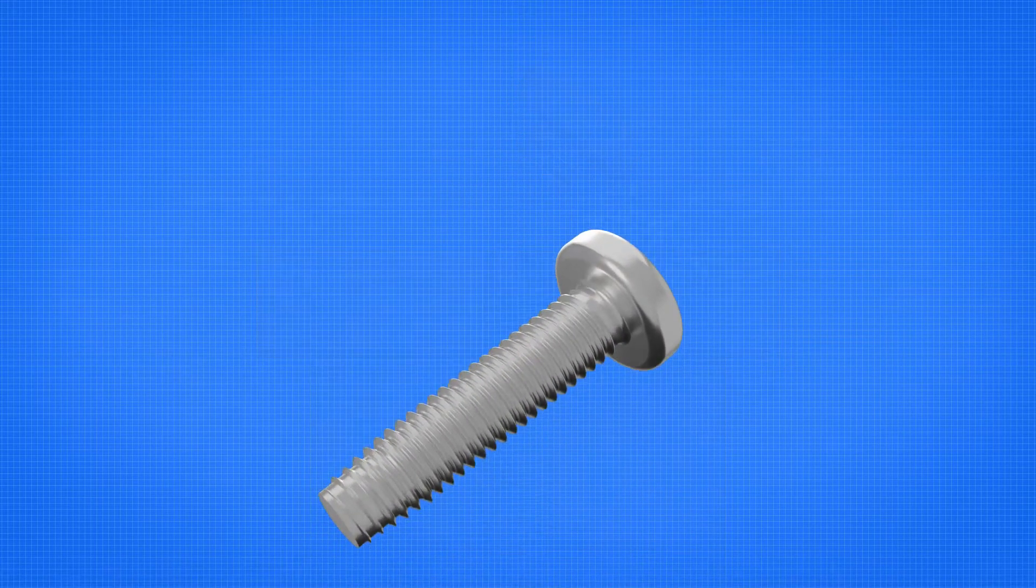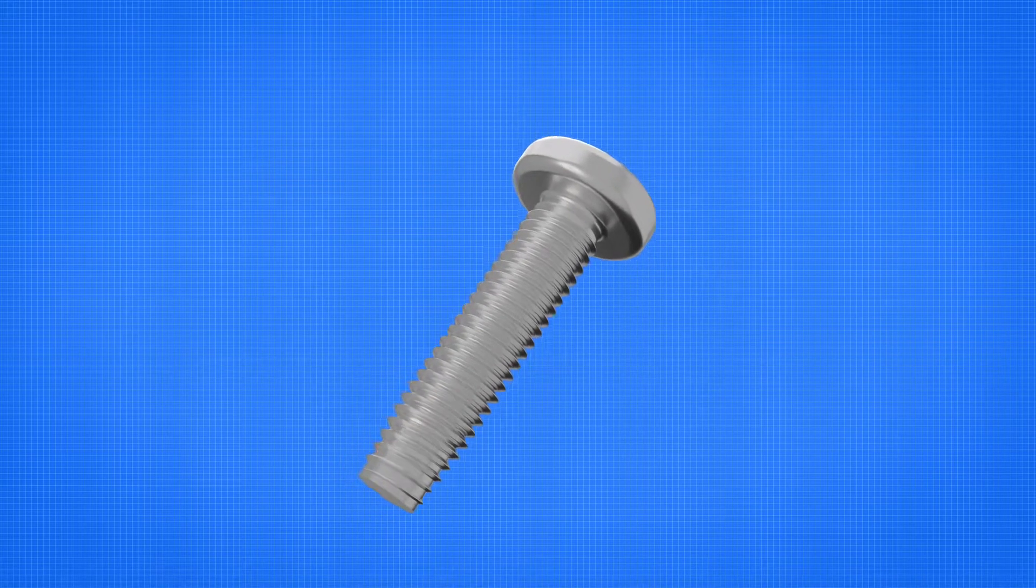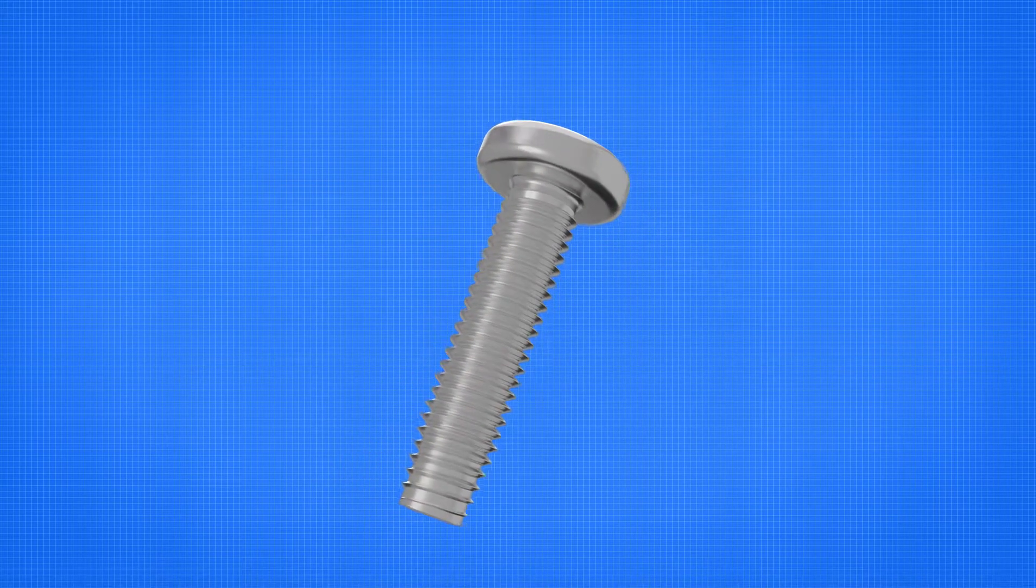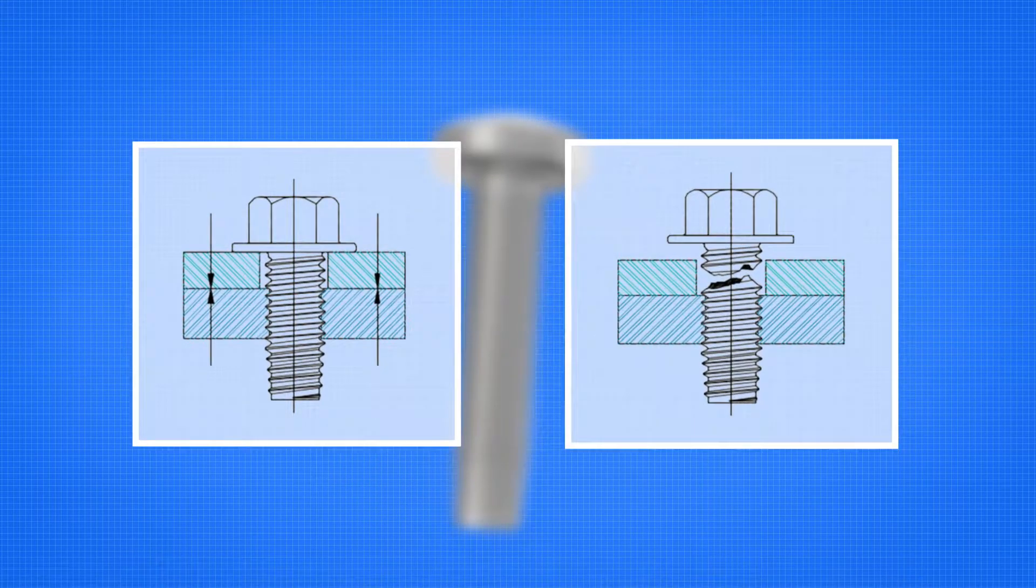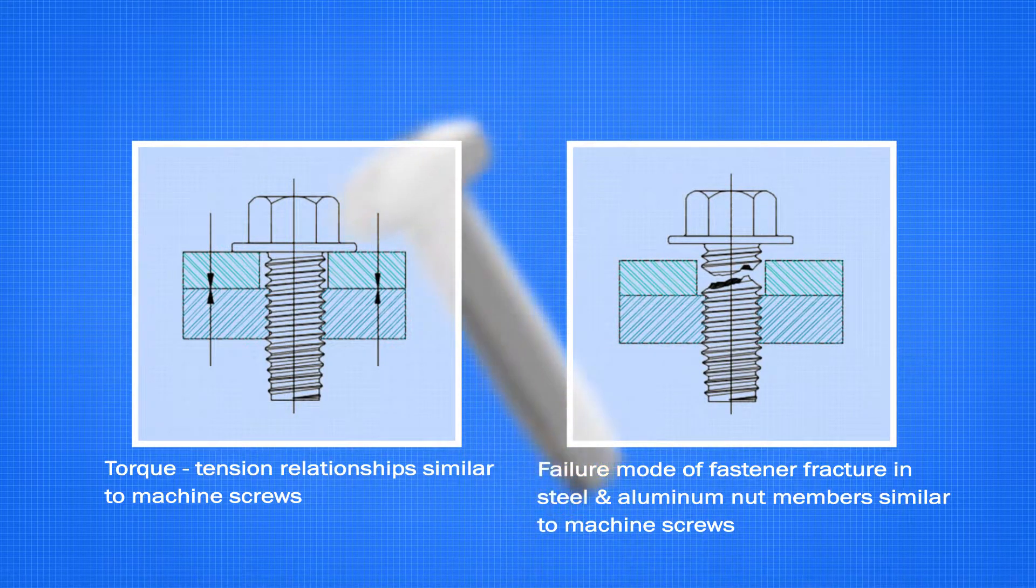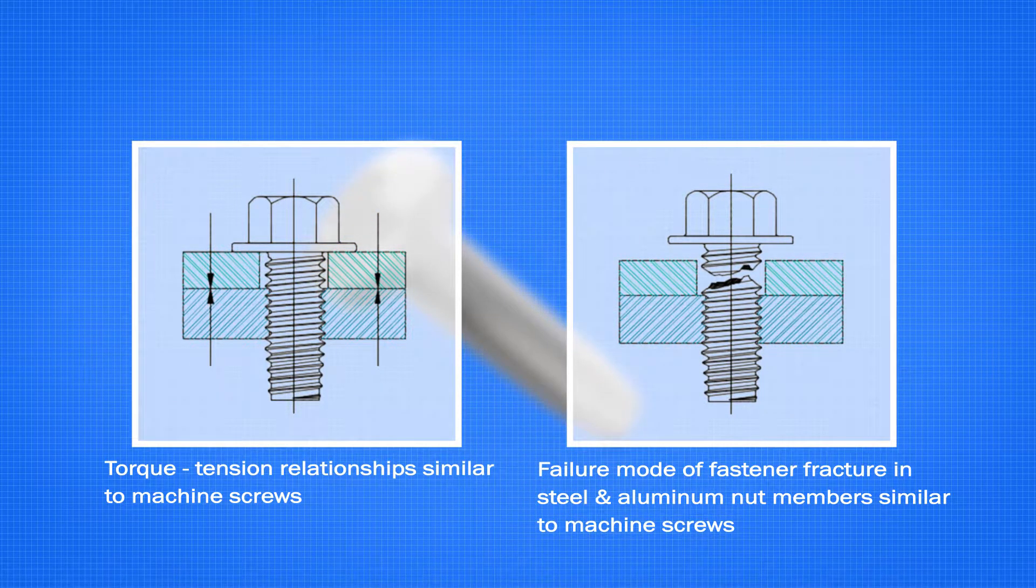Thread-forming fasteners typically require increased length of engagement to achieve fastener fracture as the mode of failure, when compared to an equivalent strength machine screw. Taptide Pro Fasteners achieve this goal in standard depths of engagement, similar to machine screws, avoiding a stripped nut member.